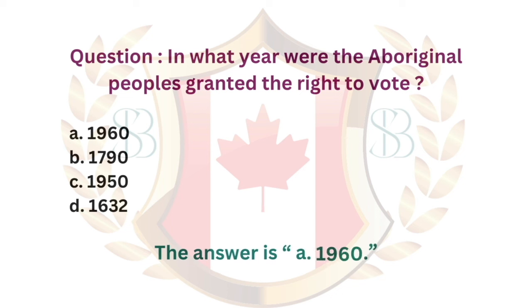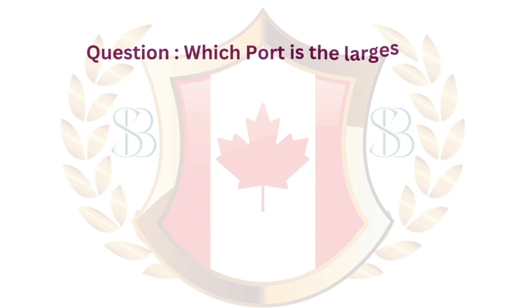Question. In what year were the Aboriginal peoples granted the right to vote? a. 1960. b. 1790. c. 1950. d. 1632. The answer is a. 1960.